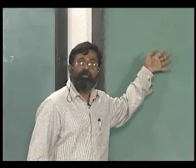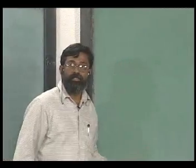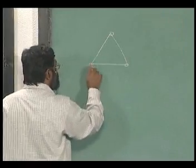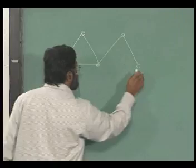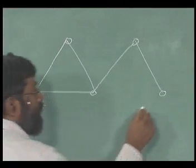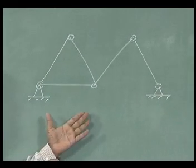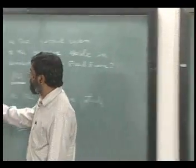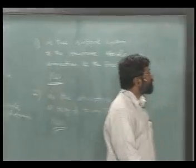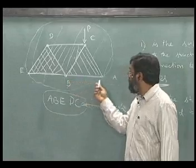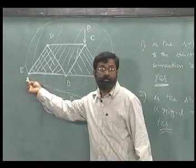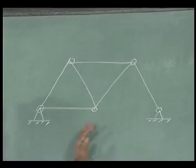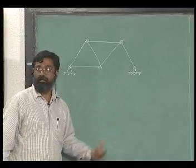Now let's look at some examples in relation to stability. I have a system like this and another configuration, and I ask the question: is this a stable system? Unlike the previous system, here both supports are hinge supports but I have one member missing. I want to ask the question: is this a rigid stable system?